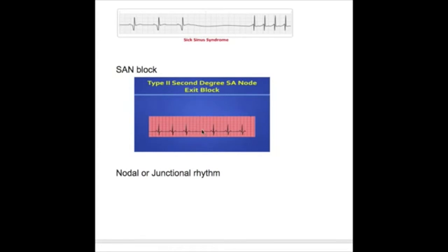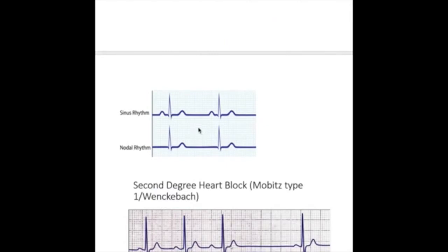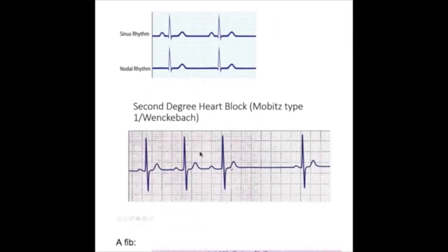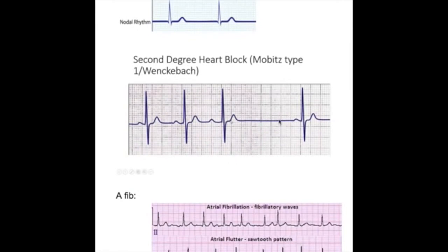P wave may be absent here. Second-degree heart block Mobitz type 1 Wenckebach may have, not always, it may have absent P wave. Atrial fibrillation and atrial flutter.